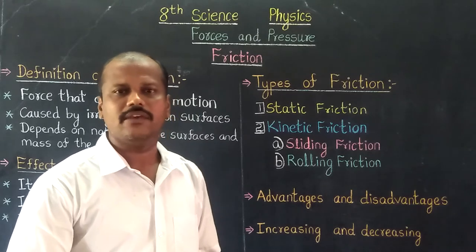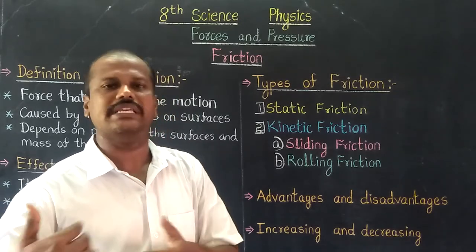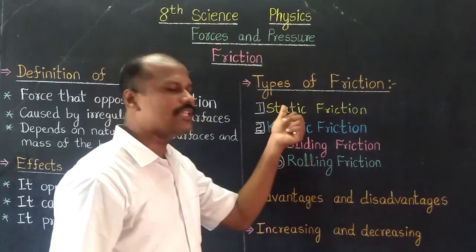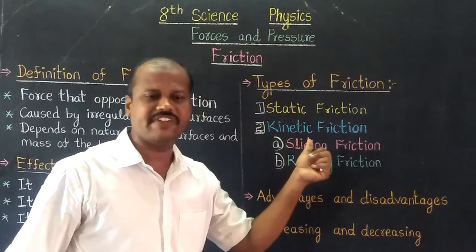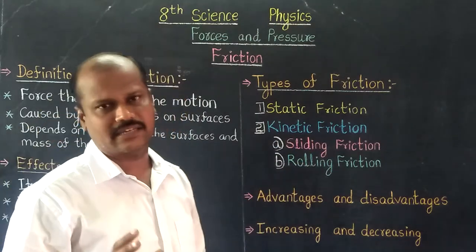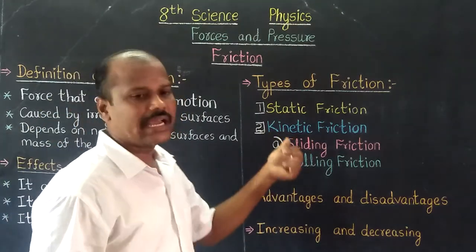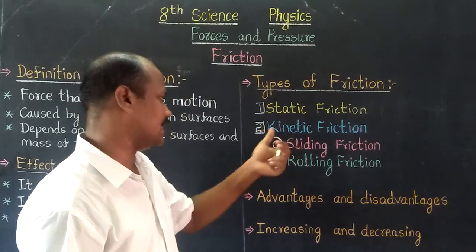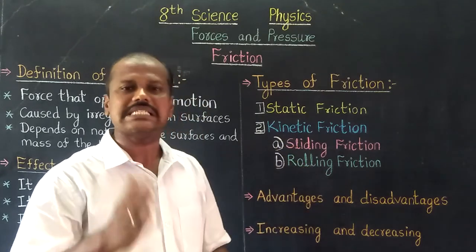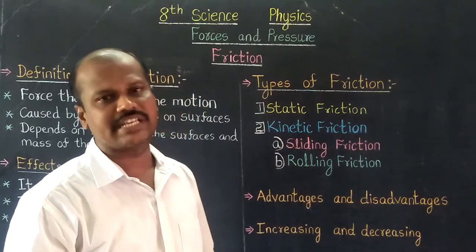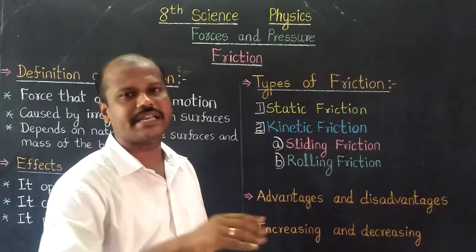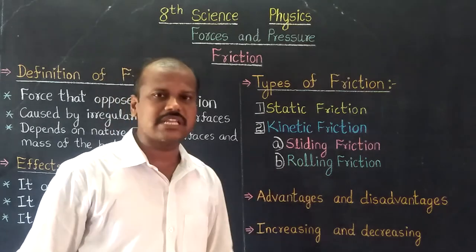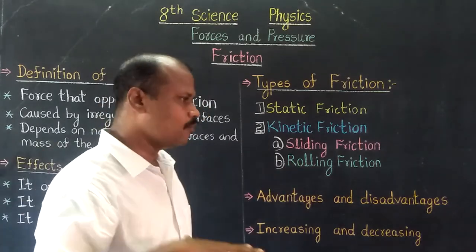So students, friction is of two types: static friction and kinetic friction. Static friction — objects are at rest. Kinetic friction — objects are in motion. Kinetic friction includes sliding friction and rolling friction. Sliding friction: objects are sliding in motion. Rolling friction: objects are rolling in motion, like wheels rolling.